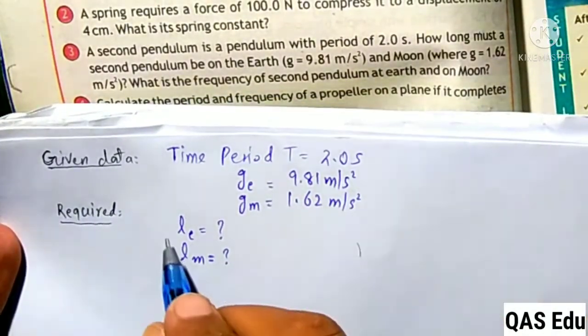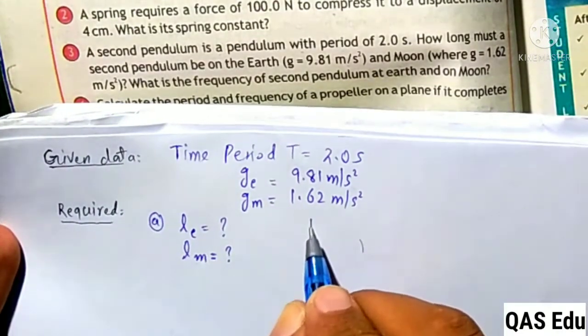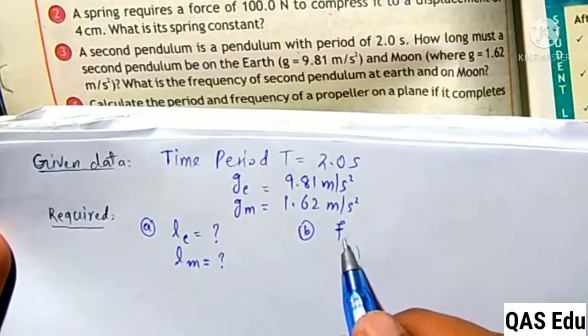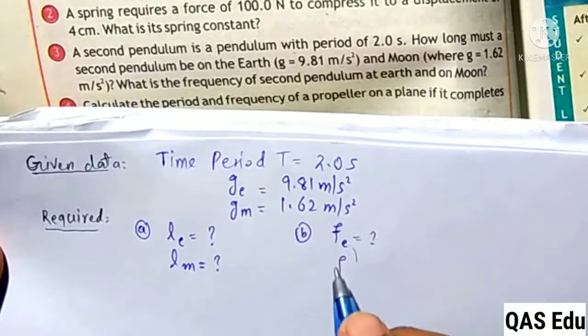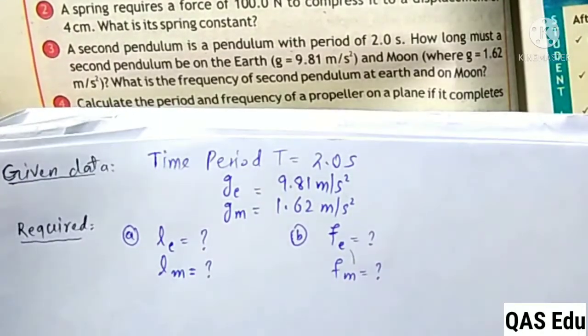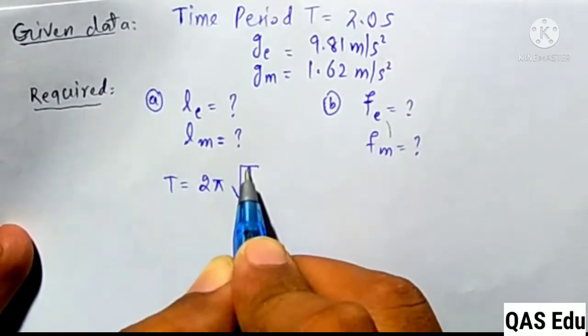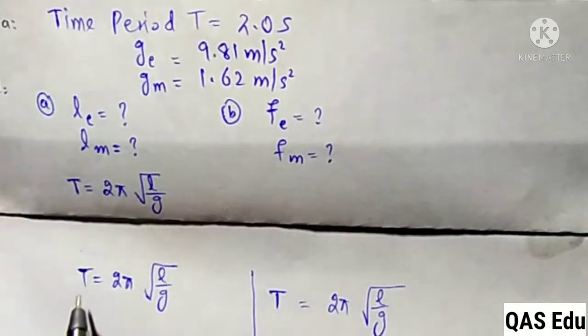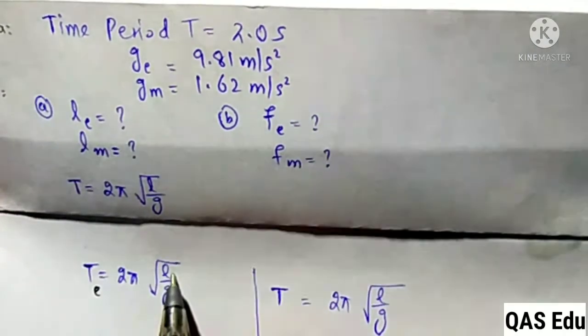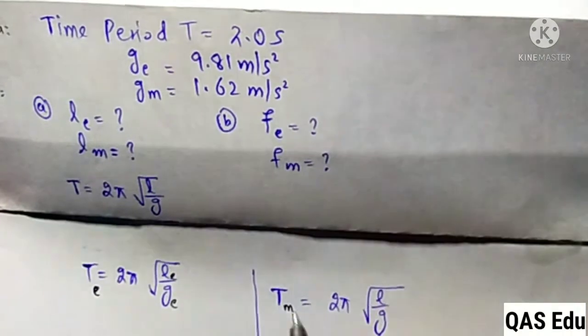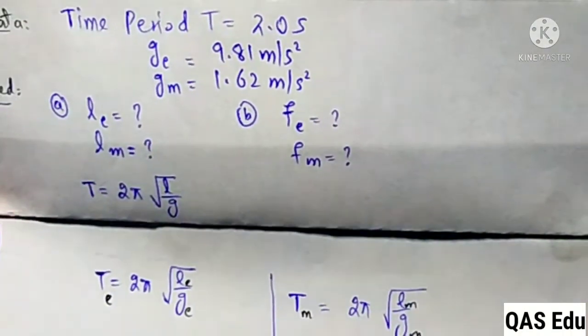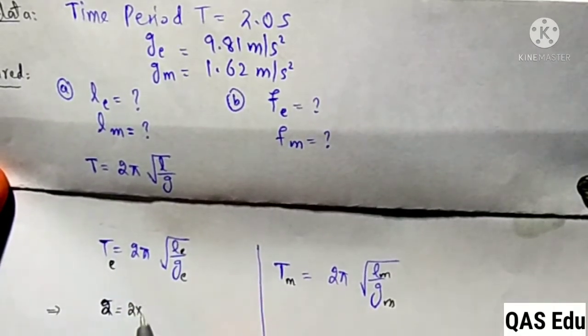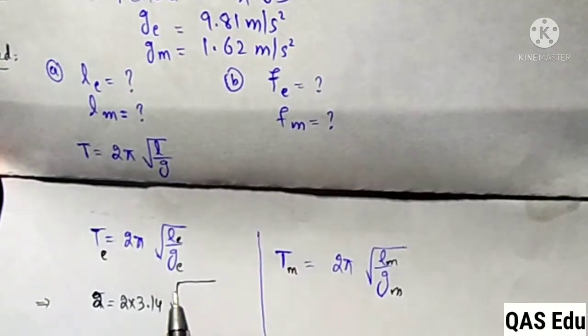We need to find the frequency of the pendulum on Earth and the frequency on the Moon. The time period equation is T = 2π√(L/g). The time period relates to the length on Earth and the length on the Moon.